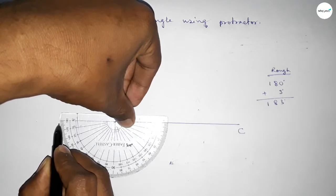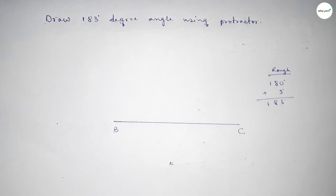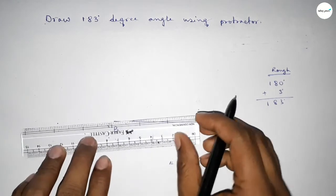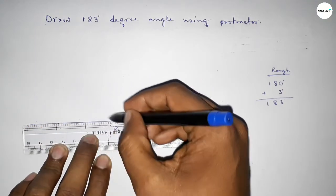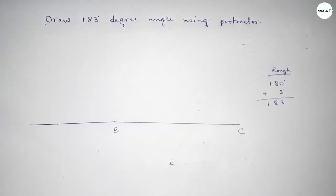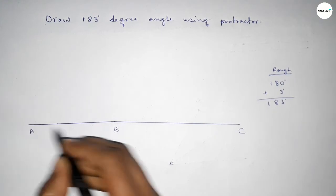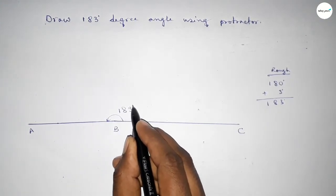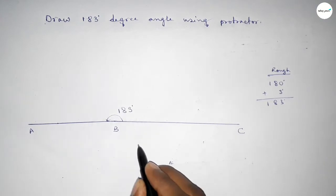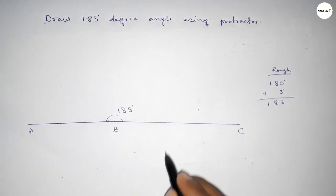So now joining this to get 183 degree angle and taking here point A. So angle ABC up to this is 183 degree angle. So therefore angle ABC up to this, angle ABC equal to 183 degree angle.